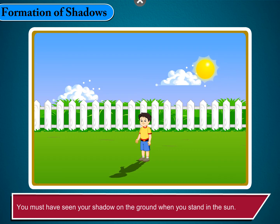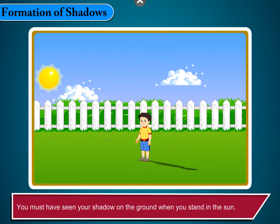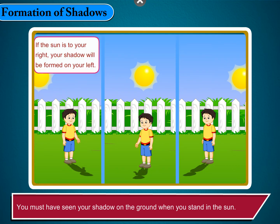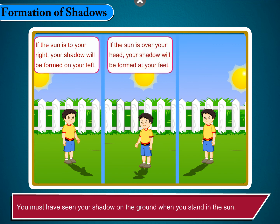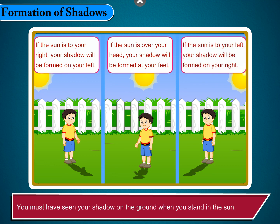You must have seen your shadow on the ground when you stand in the sun. If the sun is to your right, your shadow will be formed on your left. If the sun is over your head, your shadow will be formed at your feet. If the sun is to your left, your shadow will be formed on your right.